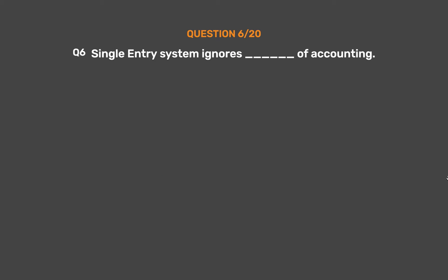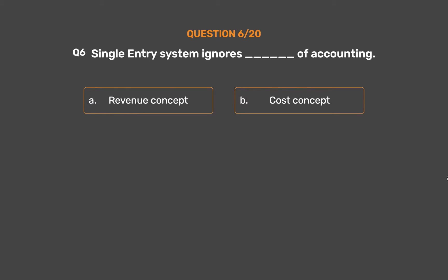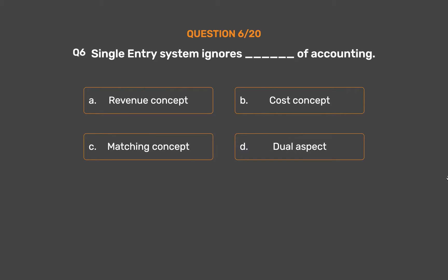Question No. 6: Single entry system ignores which aspect of accounting? Option A: Revenue concept. Option B: Cost concept. Option C: Matching concept. Option D: Dual aspect.